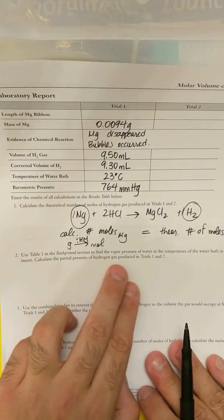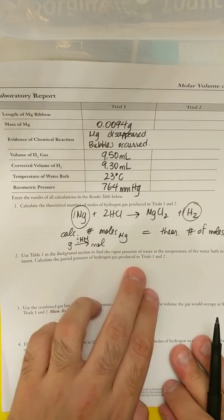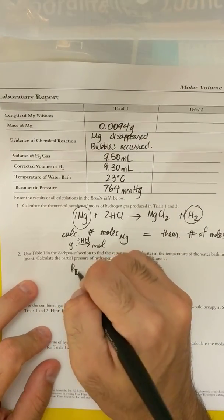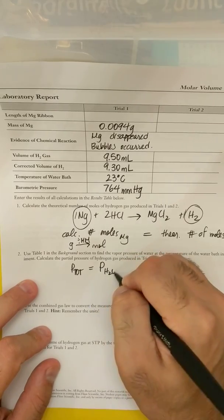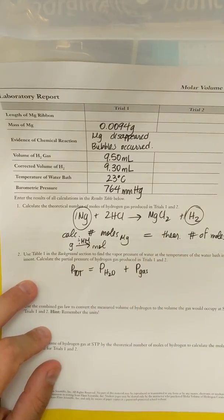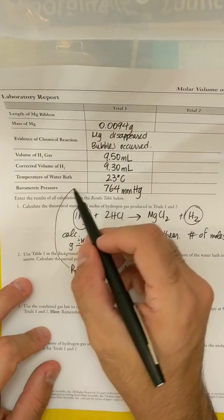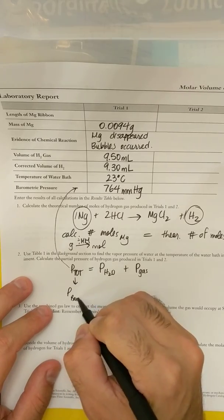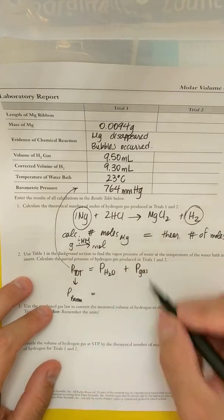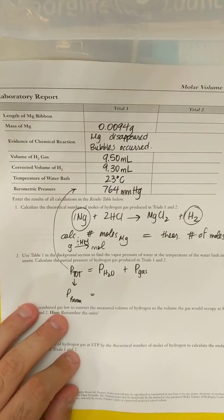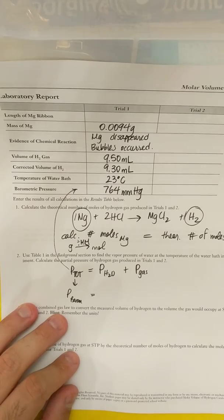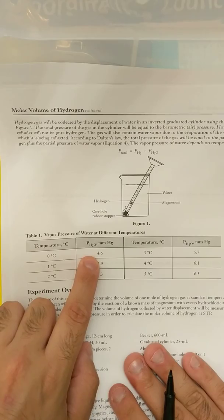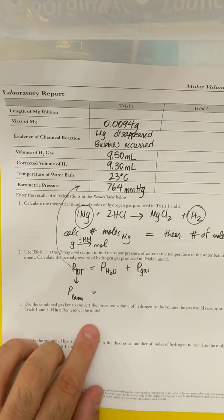Then it says use table one in the background section to find the vapor pressure of water and calculate the partial pressure of hydrogen. So there is an equation that says P total is equal to P H2O plus P of whatever gas I collected. Now P total is going to be my barometric pressure, which is P H2O, whatever the data table told you about whatever temperature you carried your water at. Most of you carried it at about zero degrees Celsius, so yours would be 4.6 millimeters of mercury.